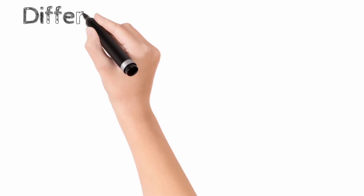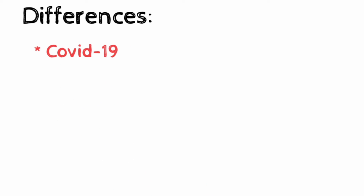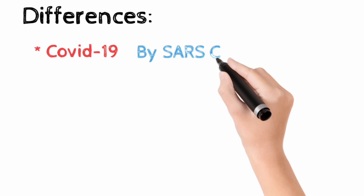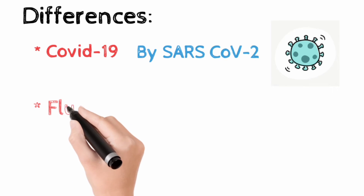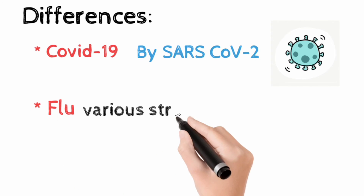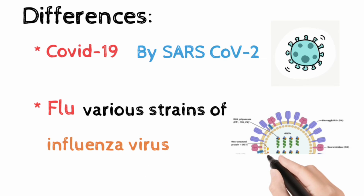Now let's talk about the differences between COVID-19 and flu. COVID-19 is caused by one virus called Severe Acute Respiratory Syndrome Coronavirus 2, or SARS-CoV-2. Flu is caused by any of several different types and strains of influenza virus.